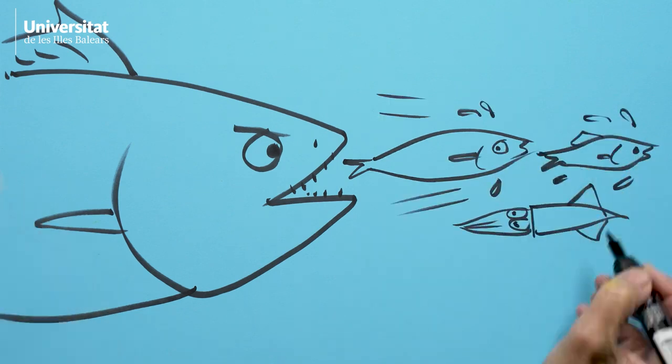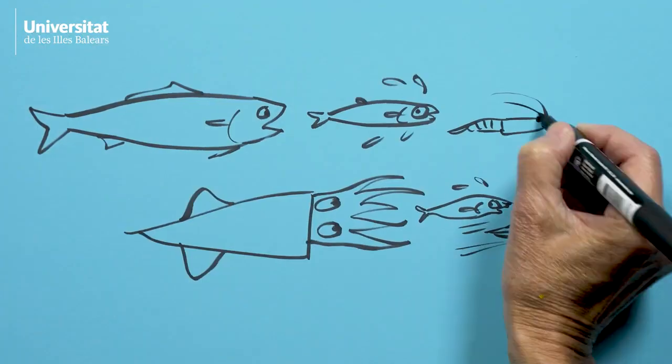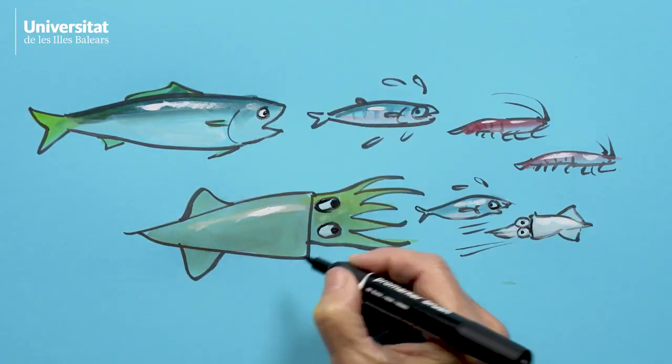Let's start with the top predators. We all know that the big fish eats the little fish. The little fish eat other smaller fish, crustaceans and cephalopods.